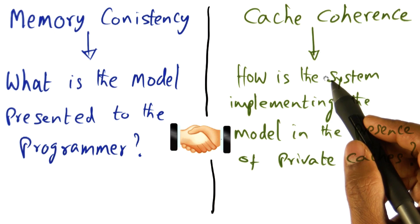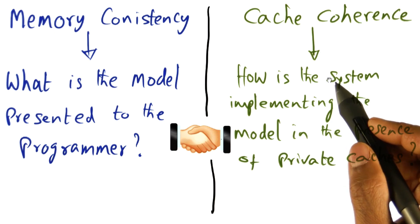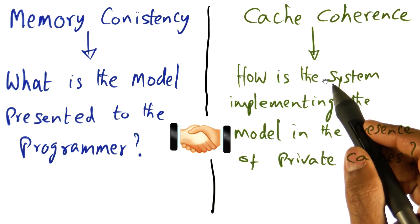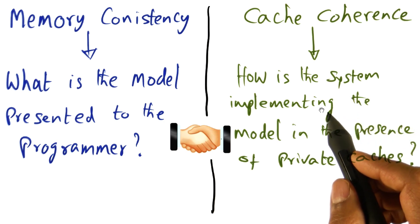There are private caches for holding data that you bring from memory, but if you modify data, it is a problem of the system software to make sure that the caches remain coherent. So it's non-cache coherent. That is called NCC shared memory multiprocessor.